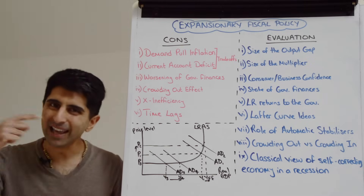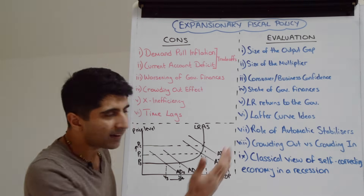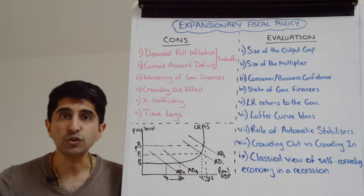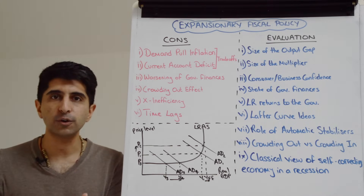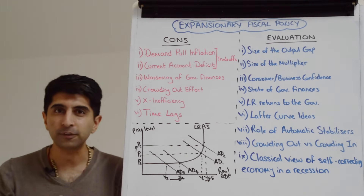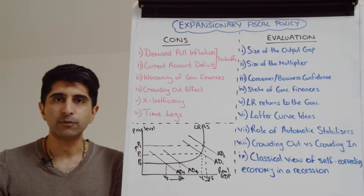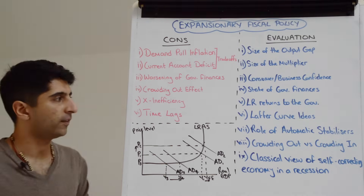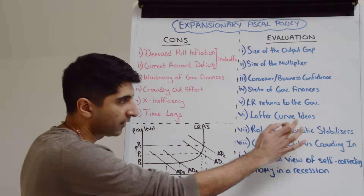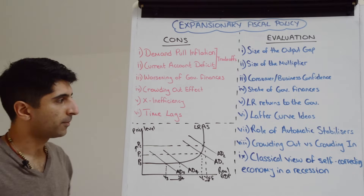We can also consider the role of automatic stabilizers. If automatic stabilizers are present and strong in the economy, they reduce the need for expansionary fiscal policy in a recession, because they help support output. If they do their job well, there is less need for what we call discretionary fiscal policy — expansionary fiscal policy on top of automatic stabilizers — which reduces the overall worsening of government finances.